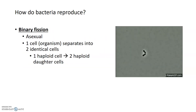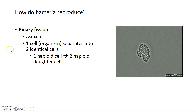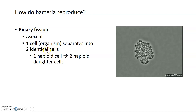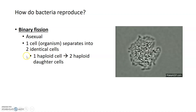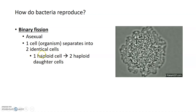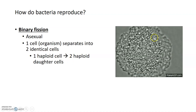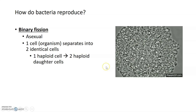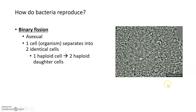Bacteria can reproduce in several different ways. By far the most common is through a process called binary fission, which is an asexual reproduction process where one cell — or one organism if we're talking about bacteria — can separate into two identical daughter cells. Since bacteria are haploid and only have one copy of their chromosome, one haploid parent cell can generate two haploid daughter cells, as shown in the GIF on the right.